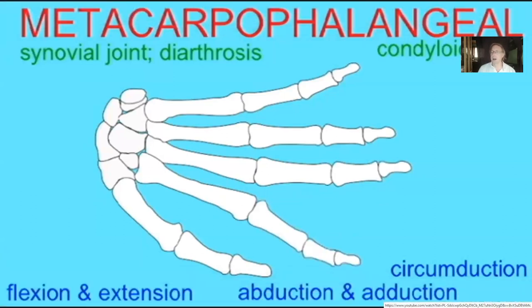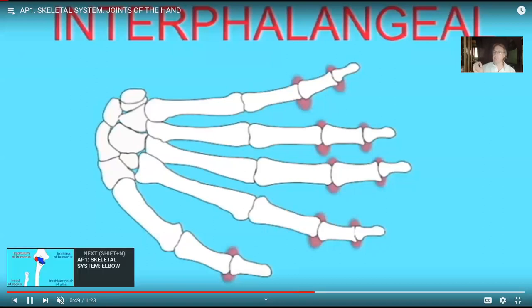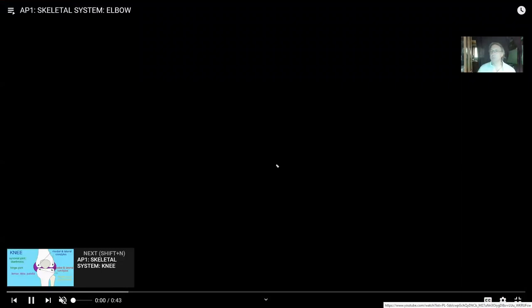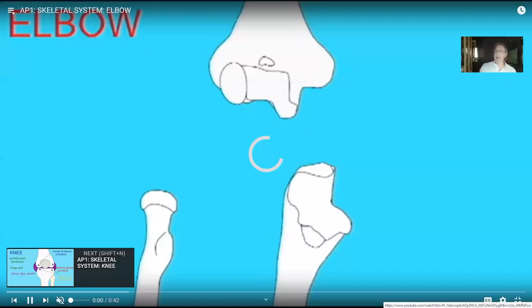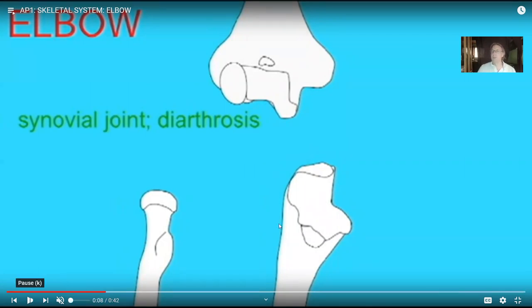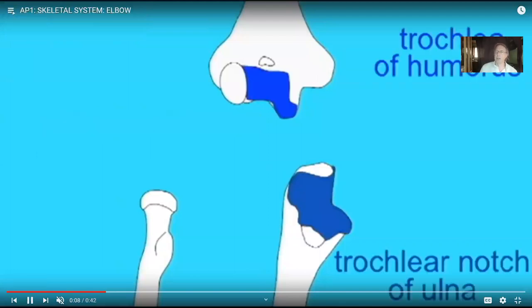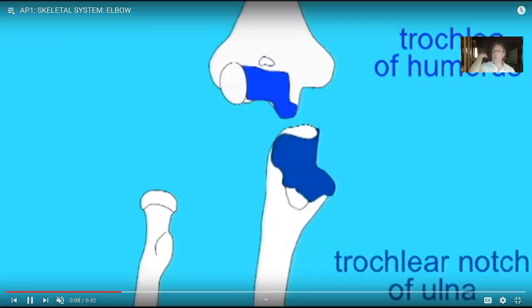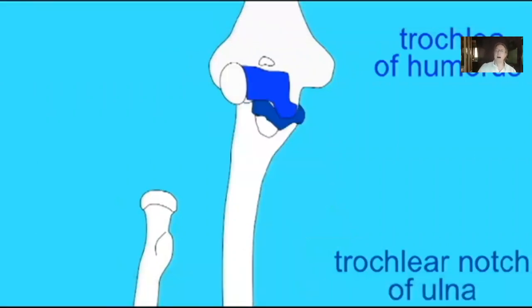Now getting to the elbow — the elbow is another example of a hinge joint. Like the hinge of a door, you have a rounded convex surface in a concave surface, but it can only move in one plane. This allows flexion and extension of the elbow. So the concave portion of the trochlear notch and the convex portion of the trochlea fit together, allowing the trochlea to move back and forth and permitting flexion and extension of the forearm.